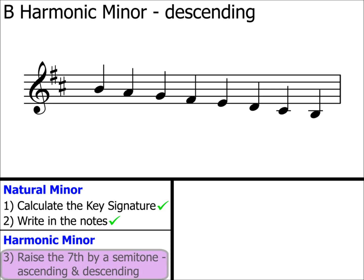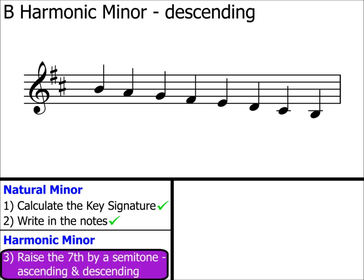To convert this to B harmonic minor, we follow step three: raise the seventh by a semitone, ascending and descending. Now, we've not been asked to create the ascending version, so we can ignore that part of the instruction, but we must raise the seventh in our descending scale. So, which of these notes is note number seven? It's this one. Remember that we always count up to determine the seventh note. So we now raise it by a semitone.